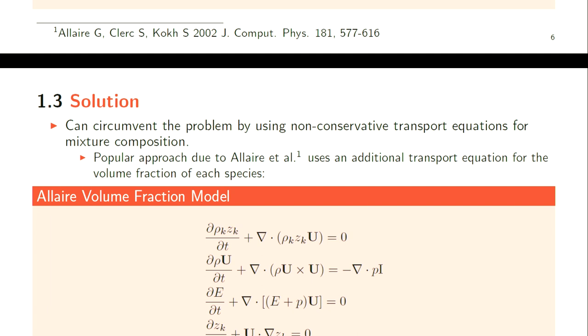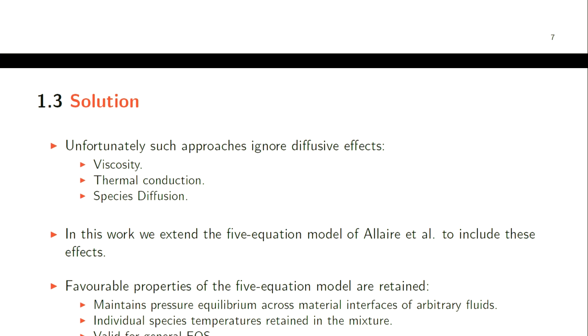Allaire et al. in this paper showed you can circumvent the problem by using a non-conservative approach based on volume fractions. This is still the same species mass equation but now written in terms of the partial density and volume fraction of each species. These two equations are also the same, and then we have an additional advection equation for the volume fraction of one of the species. The nice thing about this model is it gets rid of all those problems, and it's only non-conservative for this equation - these equations are all conservative equations.